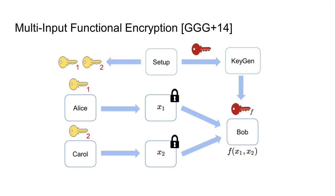In multi-input functional encryption, a functional key can be generated for a two-input function, and Bob can use this key together with two ciphertexts containing messages x1 and x2 to obtain f(x1, x2). These ciphertexts are generated using different encryption keys output by the setup procedure. A problem with this notion is that if Alice and Carol create additional ciphertexts for messages x1' and x2', Bob can compute not only f(x1', x2') but also mixed evaluations like f(x1, x2') and f(x1', x2).